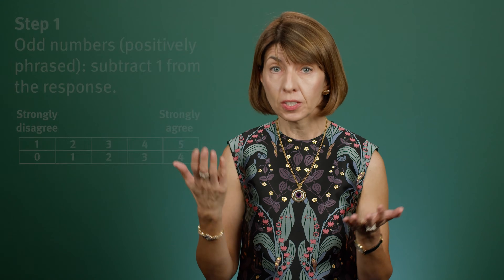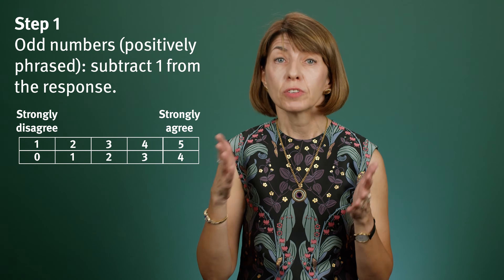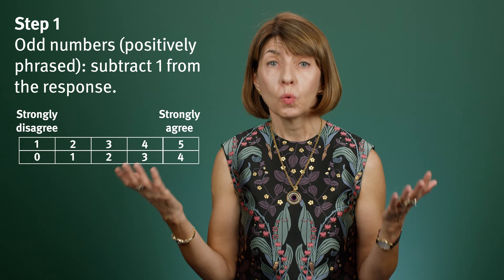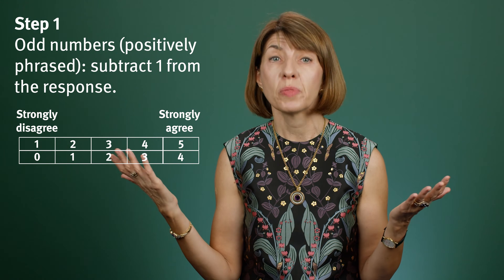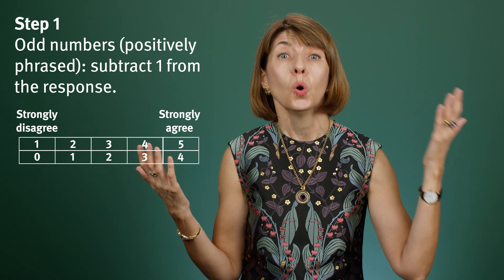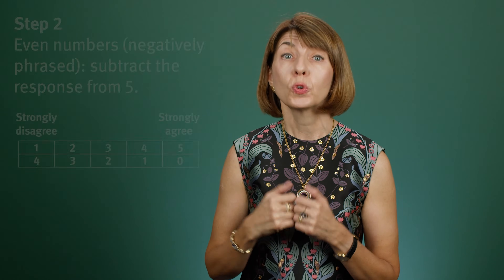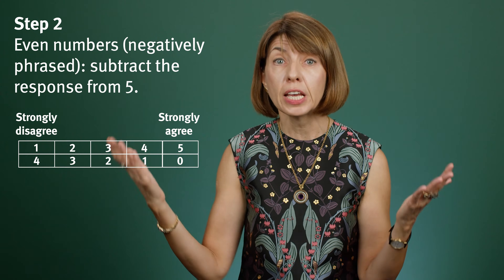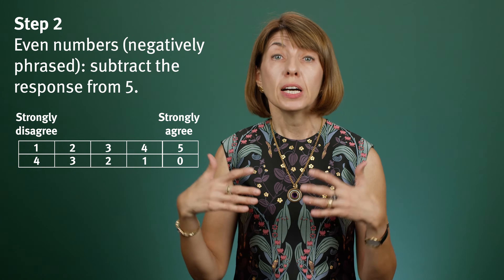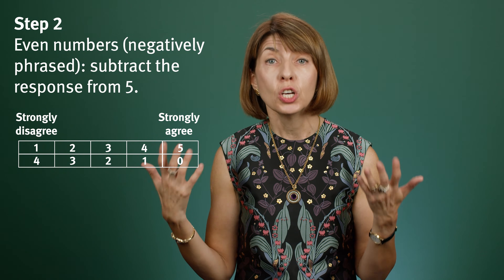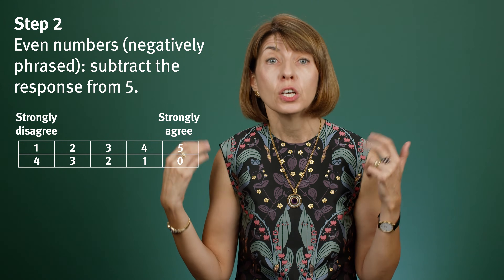When scoring the SUS, you're not just averaging the scores from each question. First, you shift the scale to be from 0 to 4 instead of 1 to 5. For odd questions, which are positive, you subtract 1 from the response — so a response of 1 becomes 0 and 5 becomes 4. For the even questions, which are negative, disagreeing is good, so you give a high score to disagreement: a strongly disagree response becomes 4 and a strongly agree becomes 0.